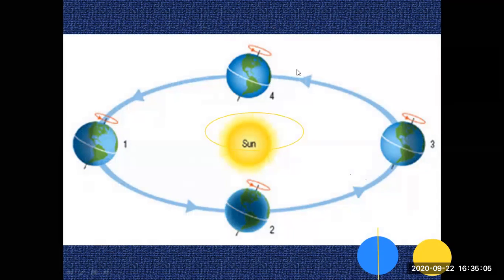You can see that the Earth has unequal lengths of day and night at different positions. In one position, the northern hemisphere has very little sunlight while the southern hemisphere has more. In another, sunlight is almost equally distributed. In a third position, the northern hemisphere gets more sunlight than the southern hemisphere. And in the fourth position, sunlight is equally distributed again.